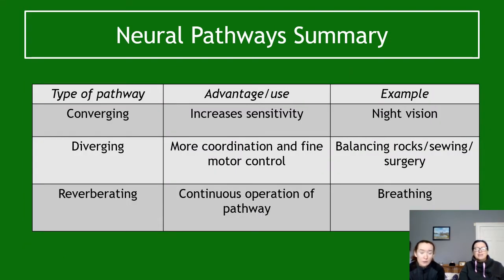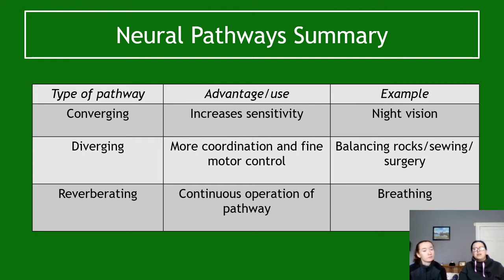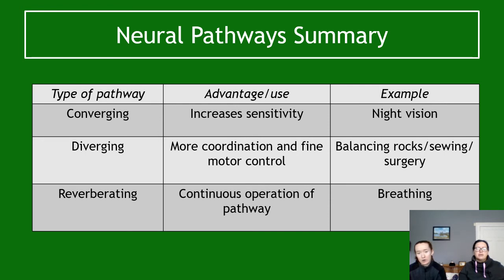Here's a summary of neural pathways. Converging pathways increase sensitivity — an example is being able to see in the dark. Diverging pathways allow for more coordination and fine motor control — examples include balancing rocks, sewing, surgery, and playing a musical instrument. Reverberating pathways occur when a later neuron links back to an earlier one, allowing for continuous operation — an example is breathing. Remember, you need to know the type of pathway and its advantage, but not necessarily the examples.